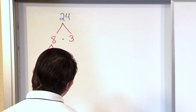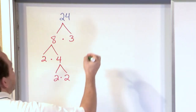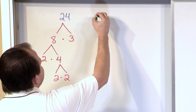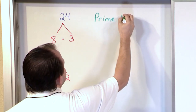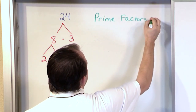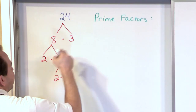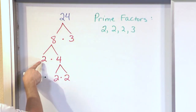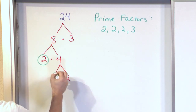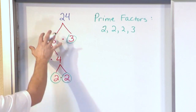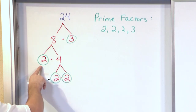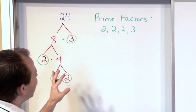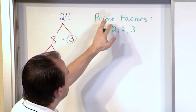So what we want to do is write down the answer. Since we were trying to find the prime factors of this number, what we found is the prime factors of 24 are 2, 2, 2, and 3. You list everything at the bottom of the tree. Every number at the bottom of every branch is what we write down, and these are the prime factors.